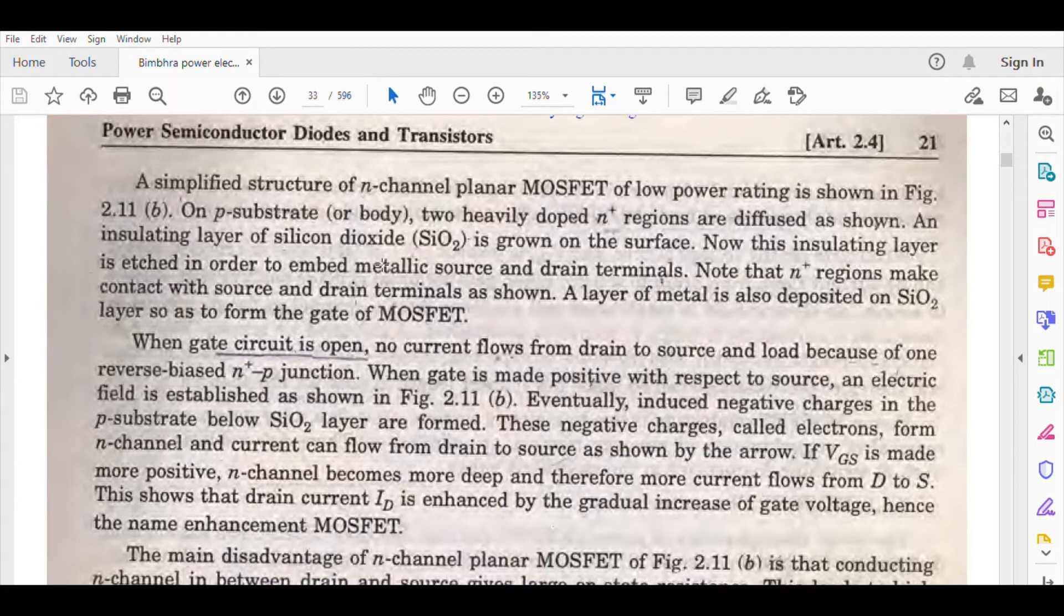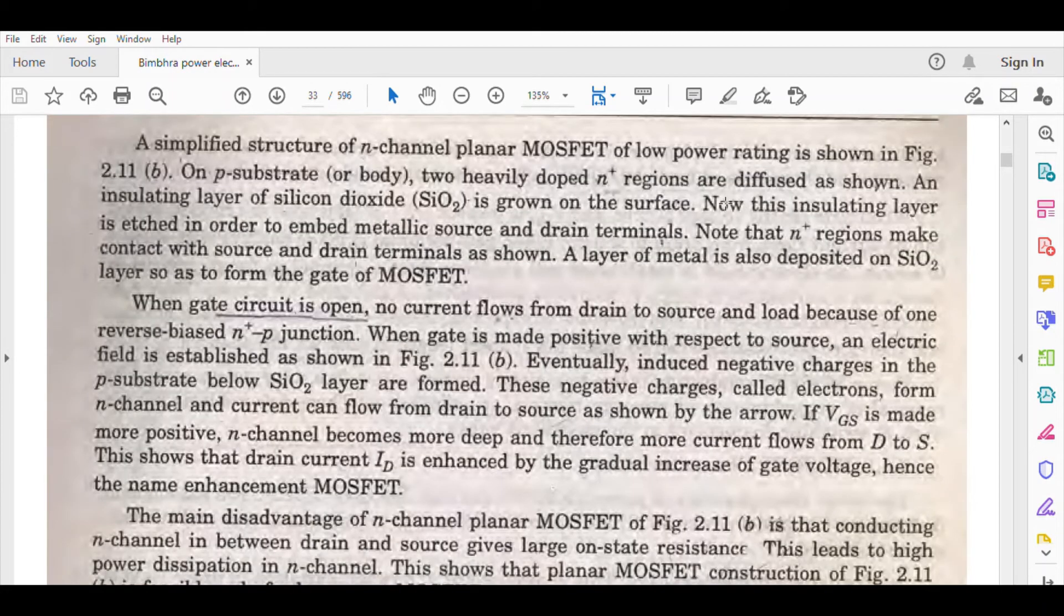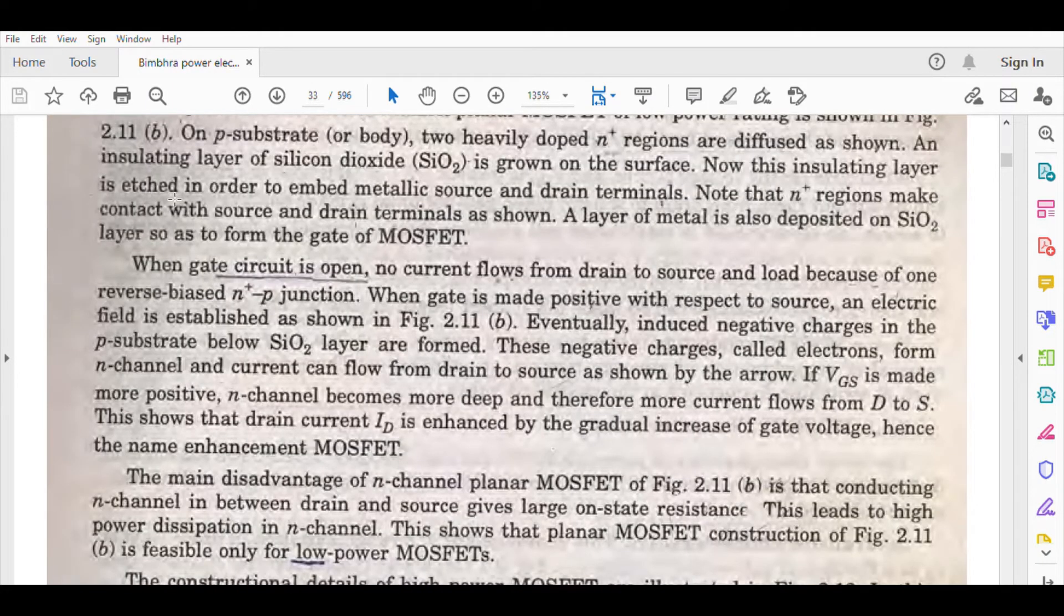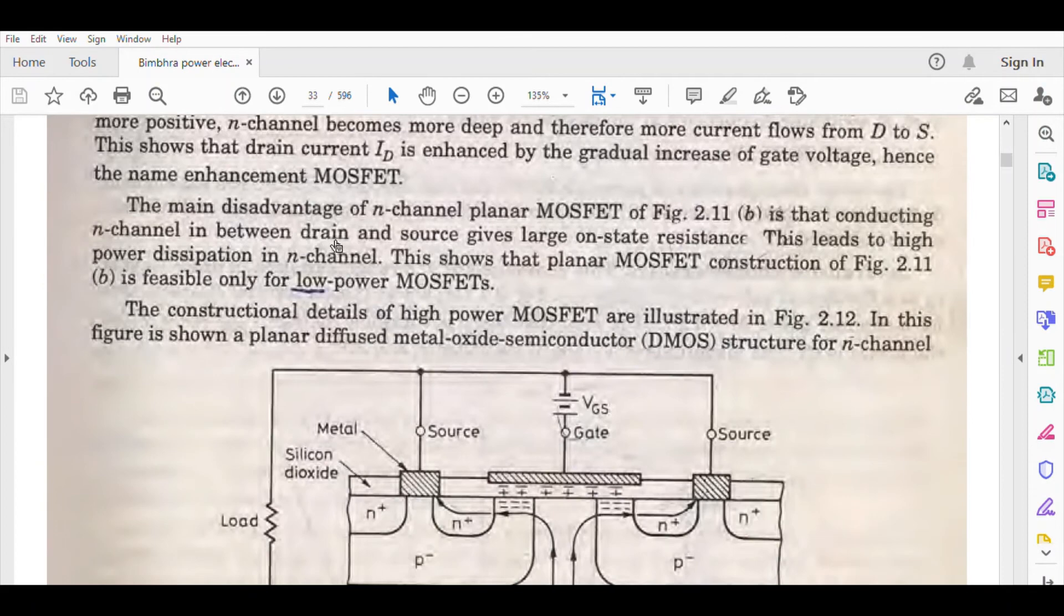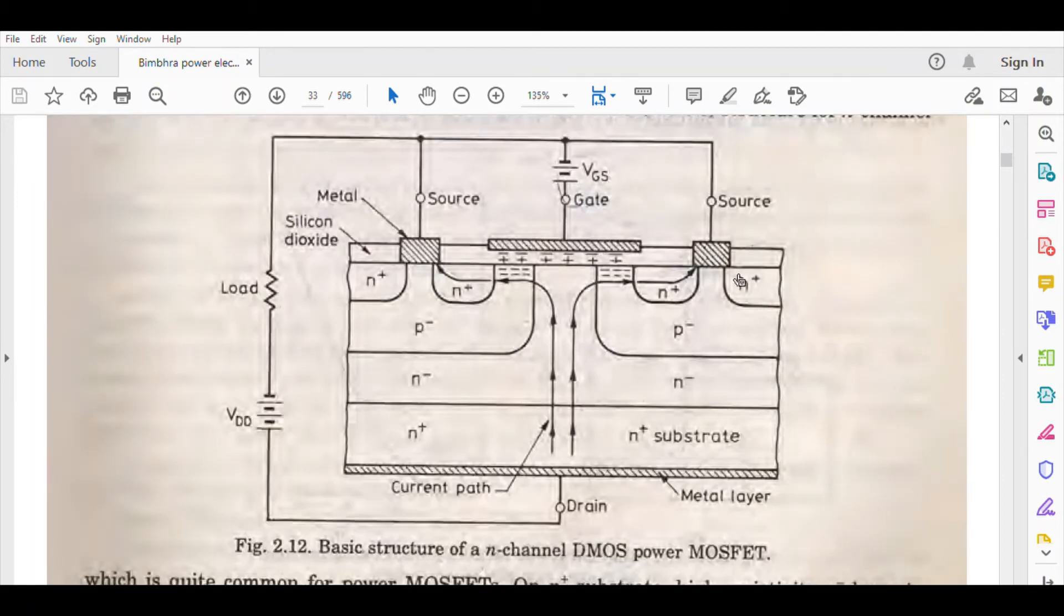For construction, heavily doped N-plus regions are diffused as shown. An insulating layer of silicon dioxide is grown on the surface. This insulating layer is etched in order to embed metallic source and drain terminals. Note that N-plus regions make contact with source and drain terminals as shown. A layer of metal is also deposited on SiO2 layer so as to form the gate of the MOSFET.